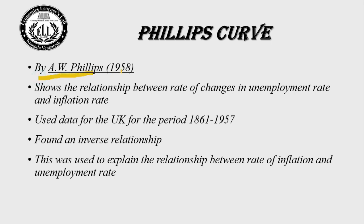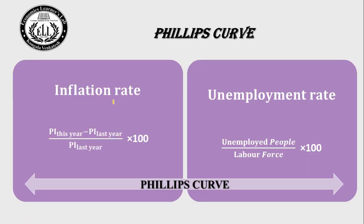What is a Phillips curve? The Phillips curve was developed by A.W. Phillips in 1958. It shows the relationship between the rate of changes in unemployment rate and inflation rate. A.W. Phillips used UK data for the time period 1861 to 1957. When he analyzed the UK data, he found an inverse relationship between the inflation rate and unemployment rate.